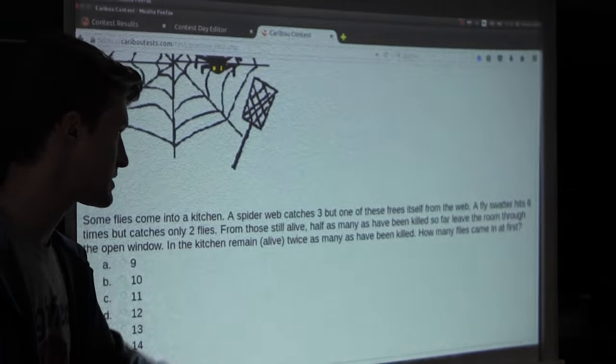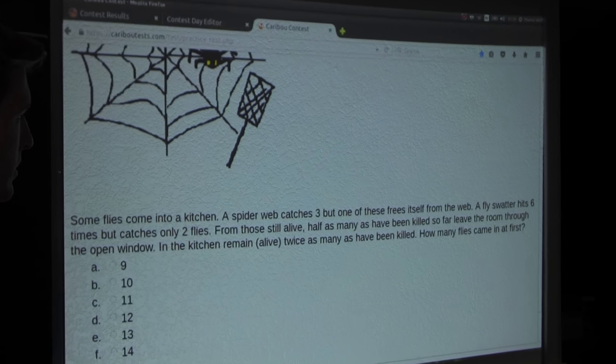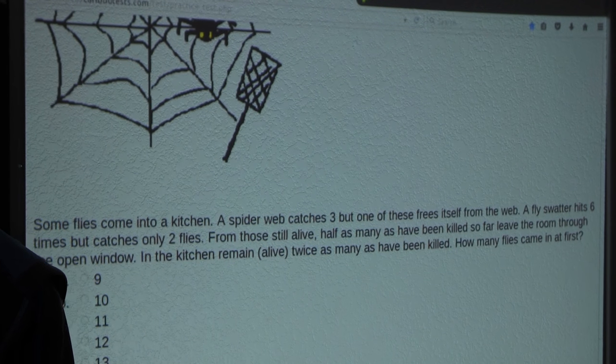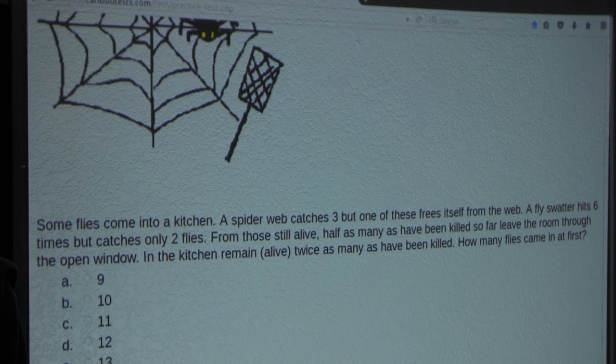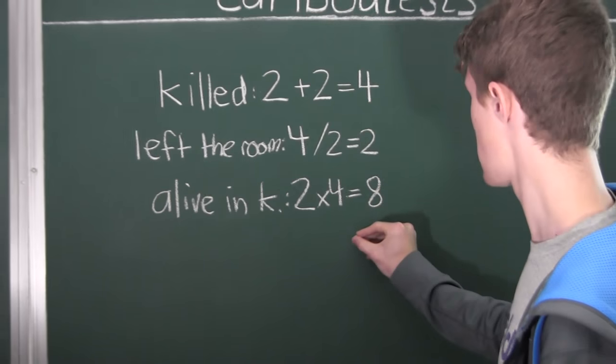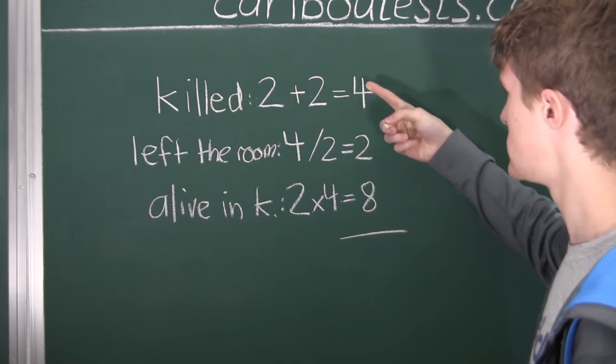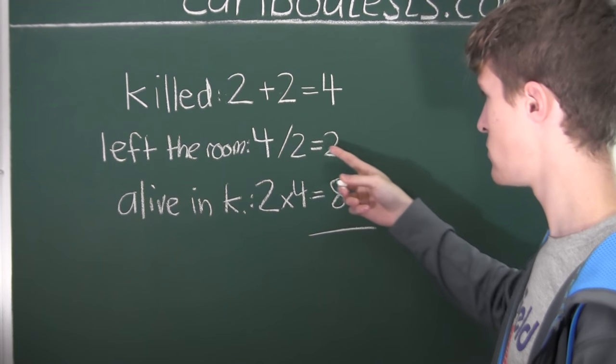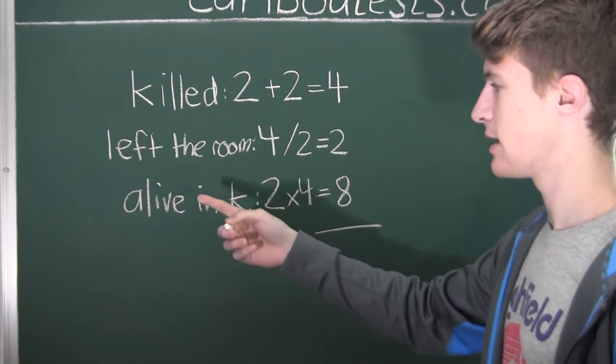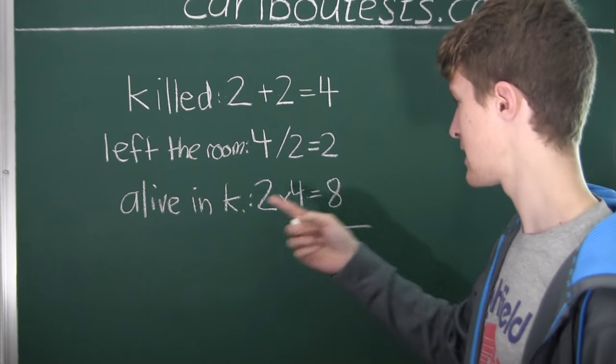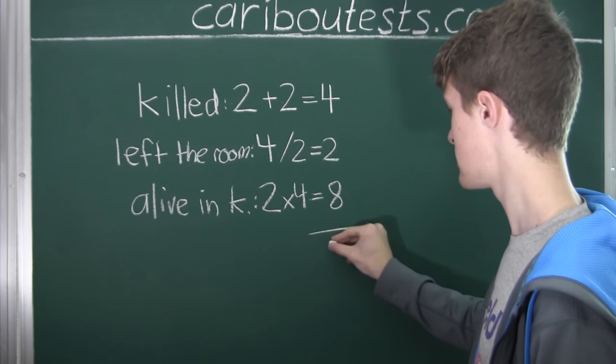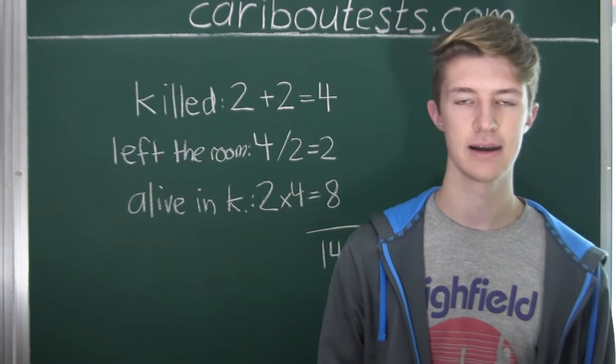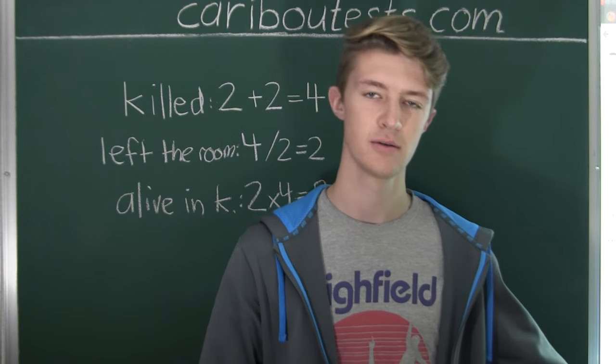And now finally, the last sentence asks how many flies came in at first. Well, now we know we've accounted for all flies, and therefore we can now find the sum. To find the sum, we just add up the number of flies that have been killed, which is four, plus the two that left the room, plus the eight that were alive at the end in the kitchen. So four plus two is six, plus eight is fourteen. So we know fourteen flies came in at first. And this would be option F, fourteen.